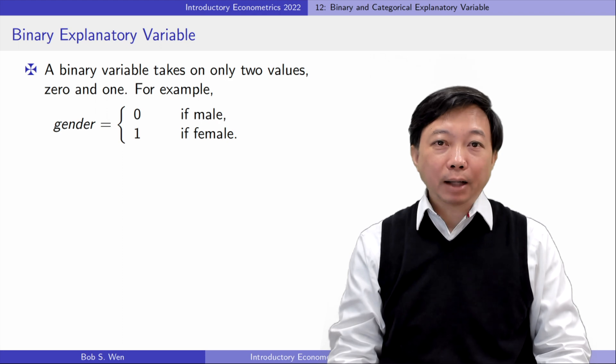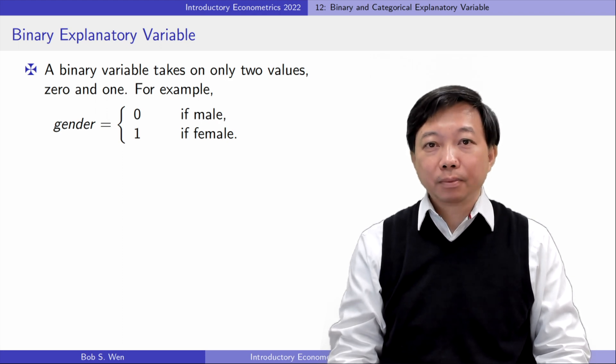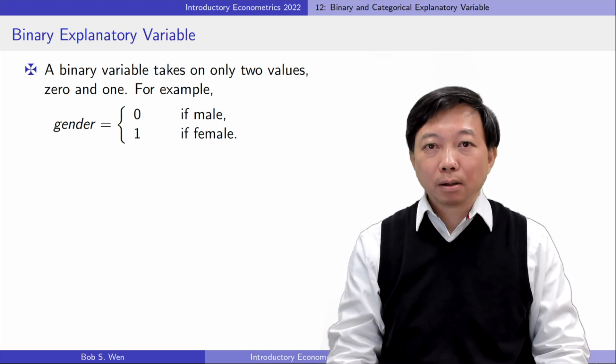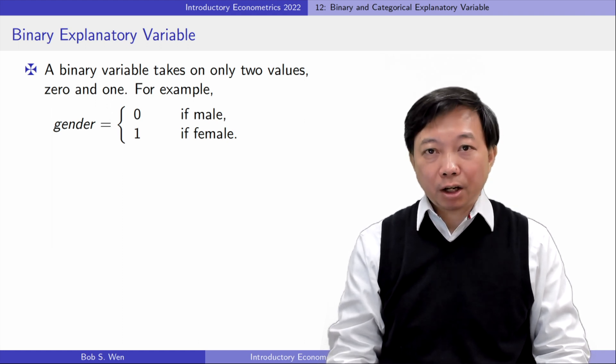A binary variable takes only two values, zero and one. It is also called the dummy variable or the indicator variable.